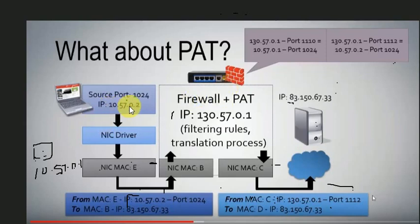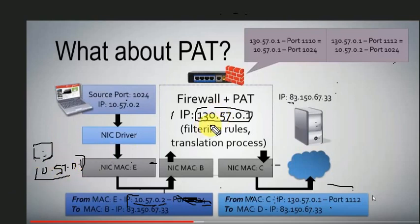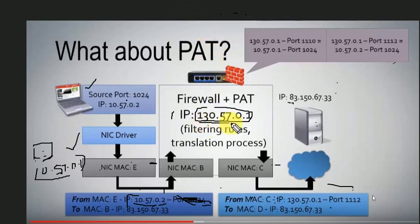For example, system 10.57.0.2 wants to reach Google.com, and system 10.57.0.1 also wants to reach Google.com. The source IP 10.57.0.2 and source IP 10.57.0.1 both go out. Google responds, and the destination IP in the response must be matched back to the correct internal system.